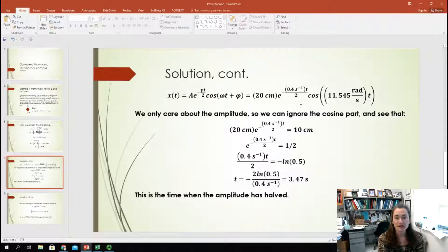Okay? So, if I plug in for that, I'm going to assume that I can start my stopwatch whenever I want. So, I'll just set my phase constant phi here equal to zero, because why not? I can, right? And then plugging in for the rest of that, my initial amplitude is 20 centimeters. And then I plug in for gamma, e^(-0.4*t/2), and then times the cosine of omega, which is 11.545 radians per second times t. So, that's my equation of motion.